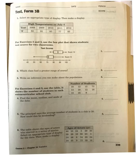For number 1, you want to select an appropriate type of display, the MECA display. The data below shows the high temperatures on July 4th. We have the years and the degrees Fahrenheit. So our years are going to be representing our x-axis and our degrees are going to be representing our y-axis. We are going to want to use a line graph to represent this data.